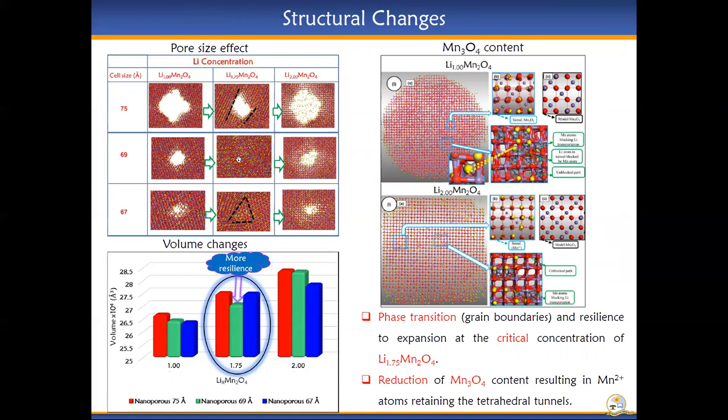Volume analysis on the structures shows resilience to expansion for nanoporous 69 at the critical concentration of Li1.75. Further observations on the structures show that the spinel Mn3O4 content gets reduced with increasing lithium concentration, resulting in Mn2+ atoms retaining the tetrahedral tunnels and also providing channels for lithium diffusion.